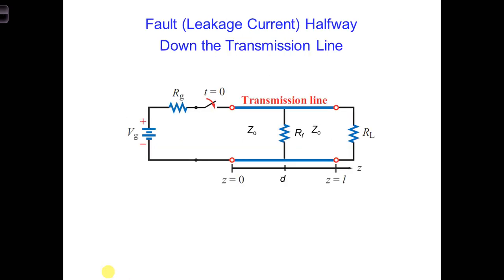So let's consider such a scenario with a fault occurring halfway down the transmission line. In this case, there's a leakage current between the two conductors represented by a shunt resistor halfway down the transmission line.